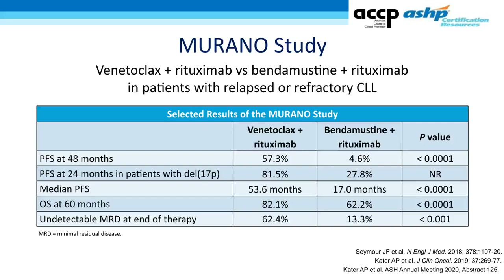The recommendation for venetoclax plus rituximab in the relapsed and refractory setting is based on the Murano study, which randomized patients with relapsed or refractory CLL to venetoclax plus rituximab or bendamustine plus rituximab. Progression-free survival, median progression-free survival, and overall survival at 60 months all favored the venetoclax plus rituximab arm.